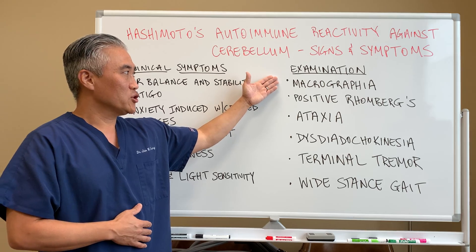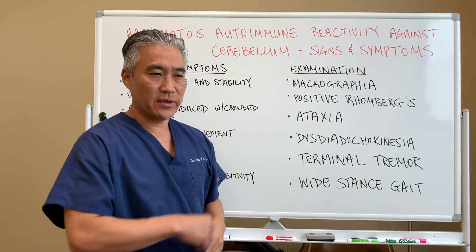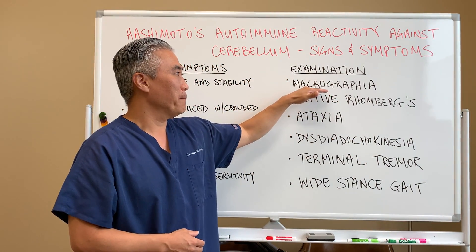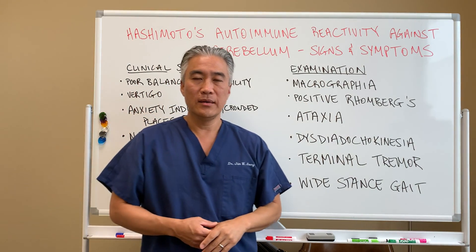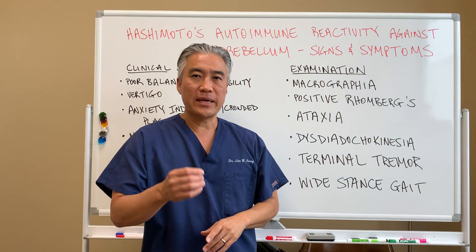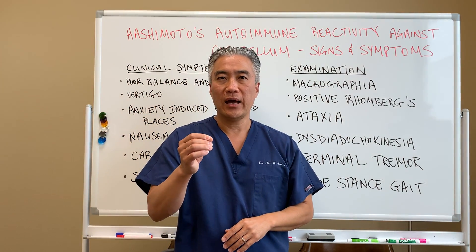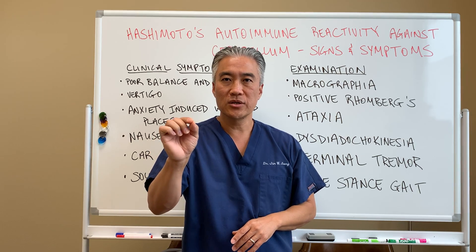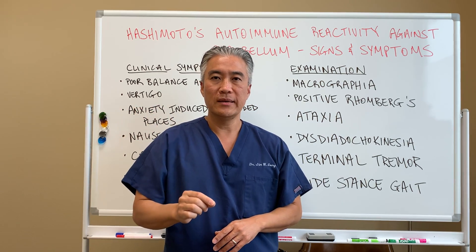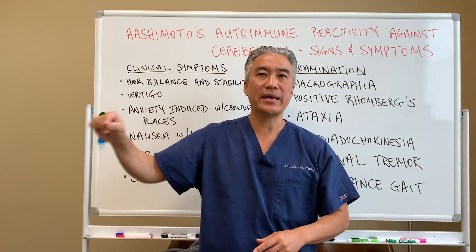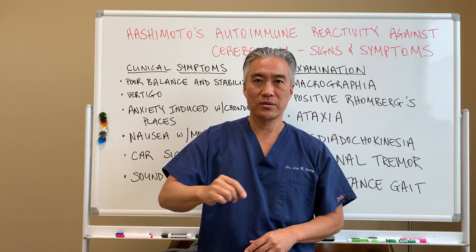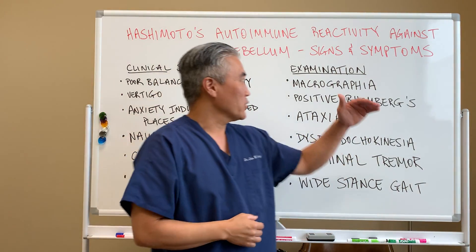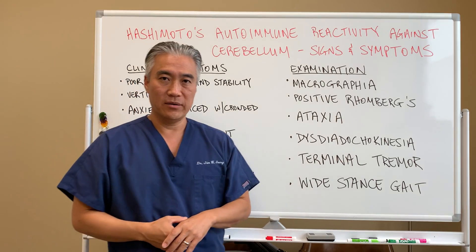We do an examination when the patient comes in. If they write something and have macrographia — because patients who have cerebellar issues have problems with fine motor movements — the handwriting becomes very large. You can see big letters, so we look for macrographia.